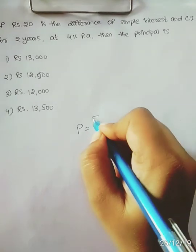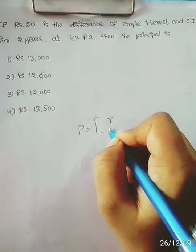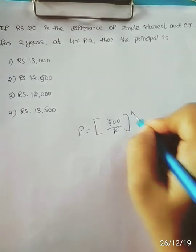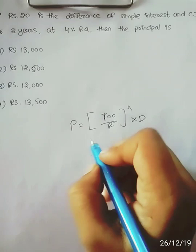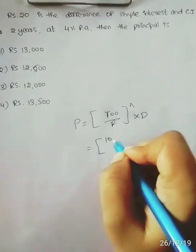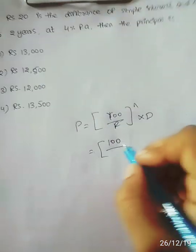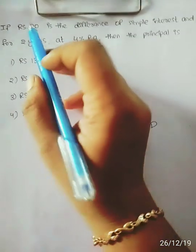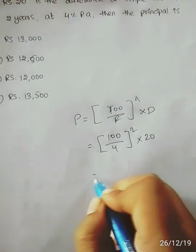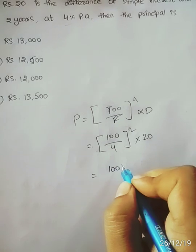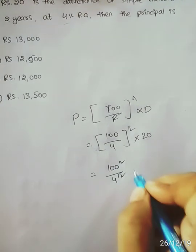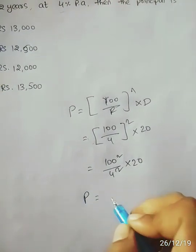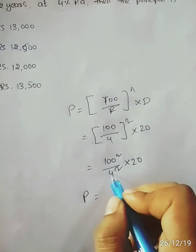The formula is P equal to (100/R) whole power n into D. The rate of interest is 4% per annum, and n is 2 years at 4% per annum.